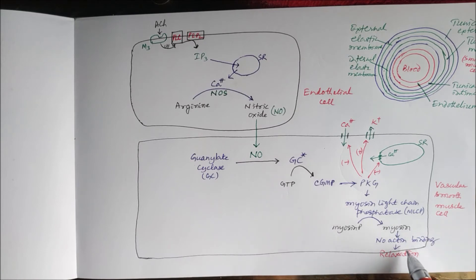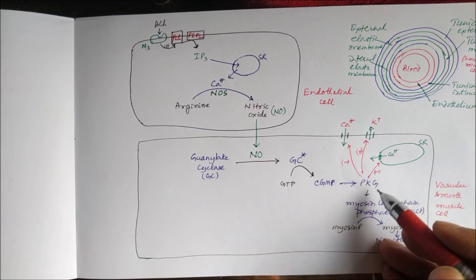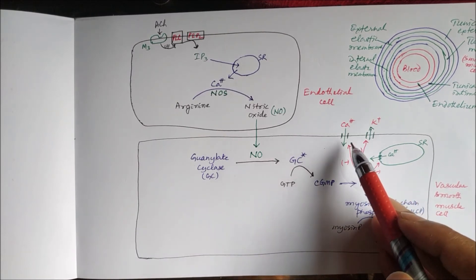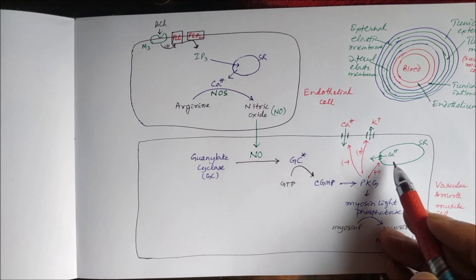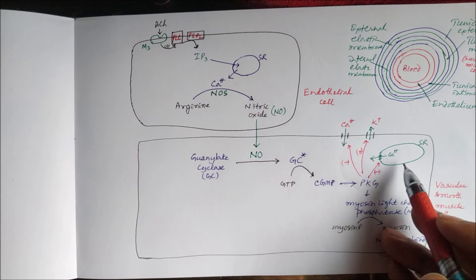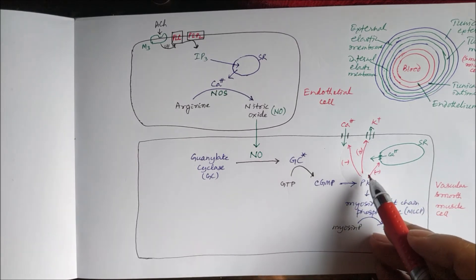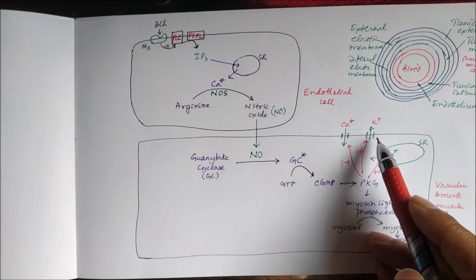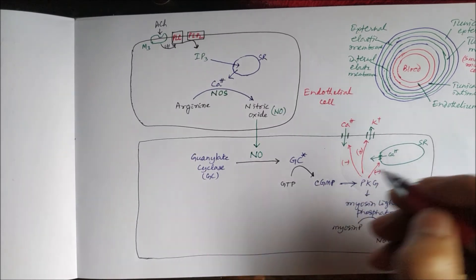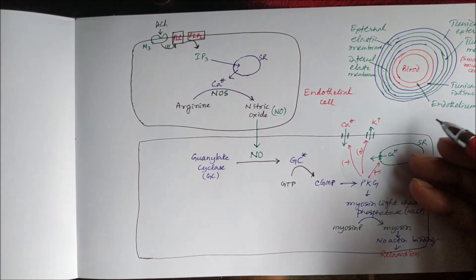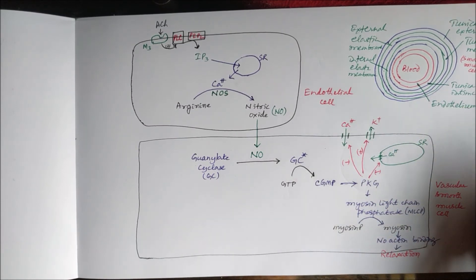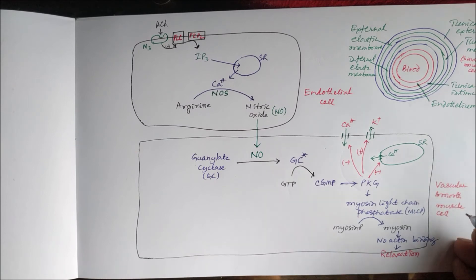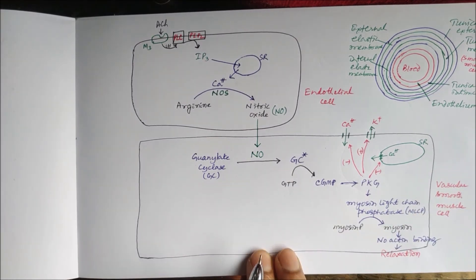In addition to this, protein kinase G also inhibits calcium channels and inhibits the release of calcium from calcium stores in the sarcoplasmic reticulum. It also opens potassium channels, which causes hyperpolarization, and hyperpolarization is associated with relaxation — so the smooth muscle cell becomes more relaxed.